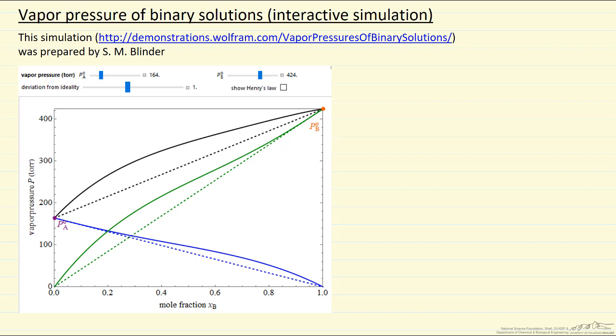This interactive simulation shows the phase behavior for vapor-liquid equilibrium phase behavior for non-ideal binary solutions. The curves here represent individual contributions to the pressure of a liquid mixture. The saturation pressures can be changed with the sliders on the top.